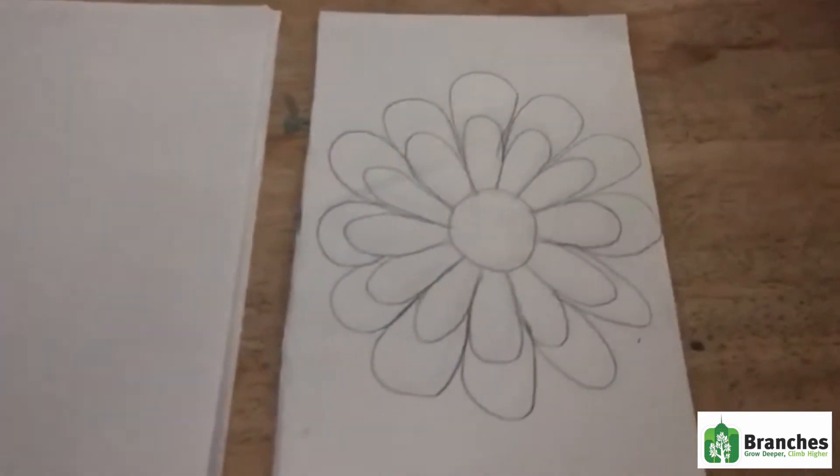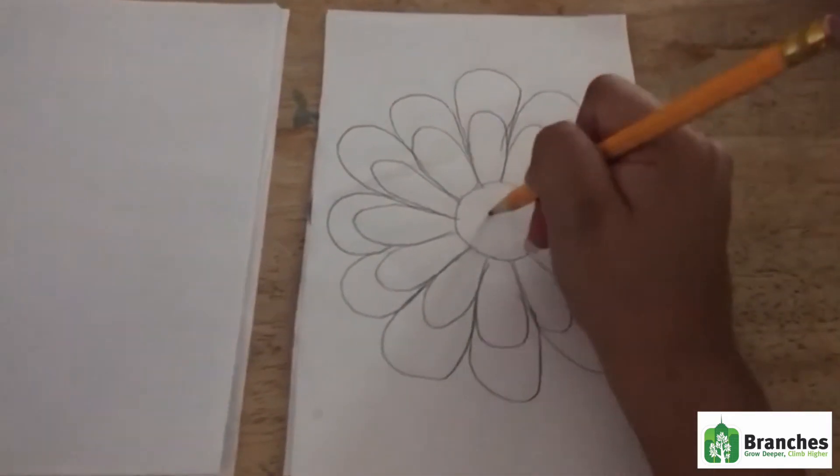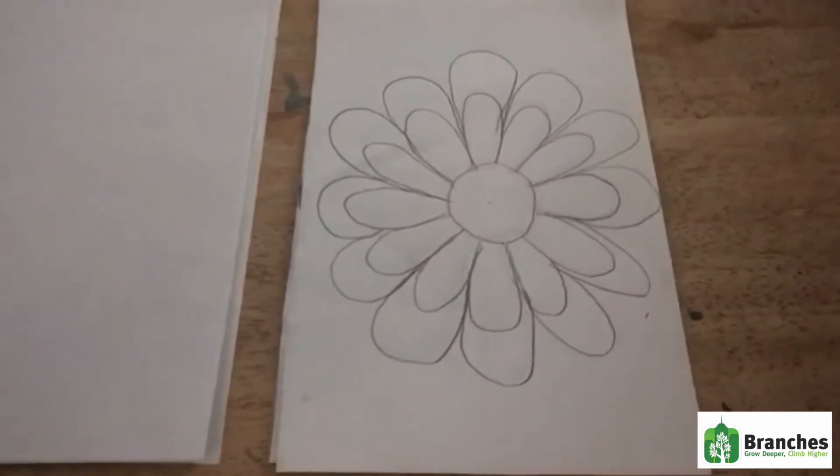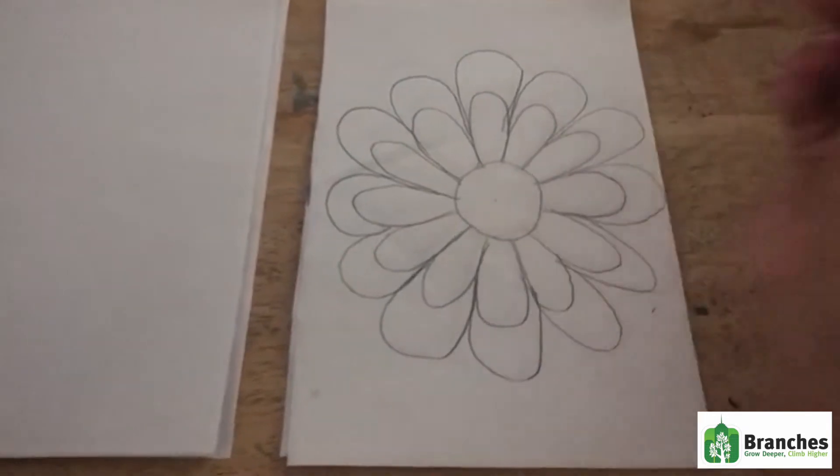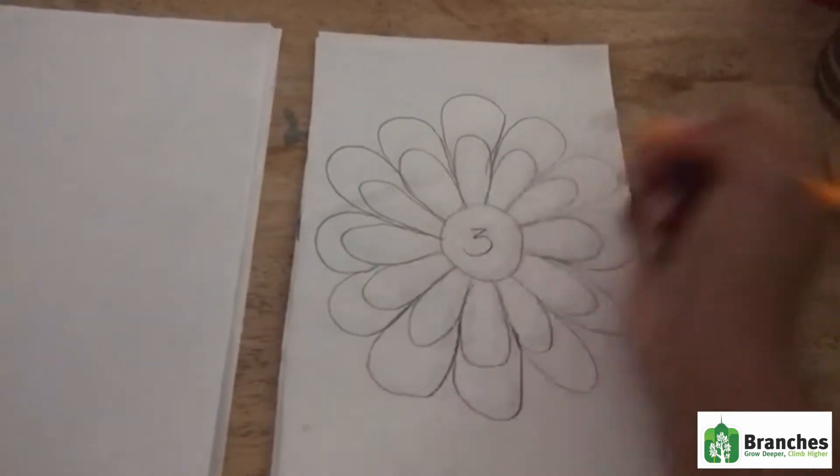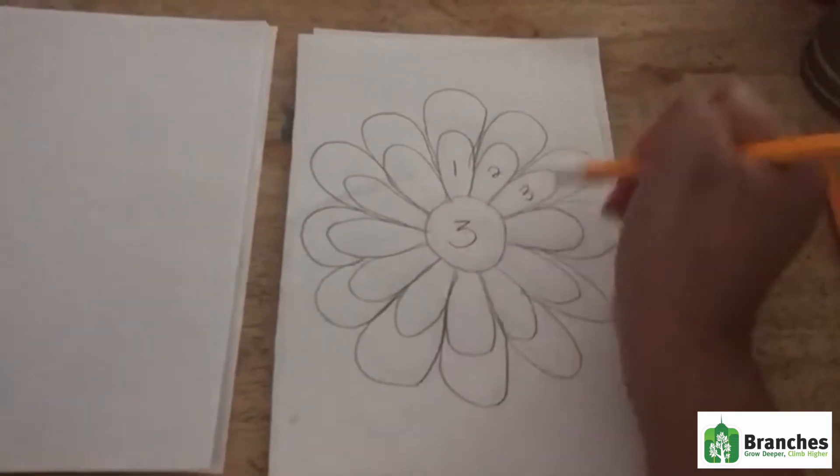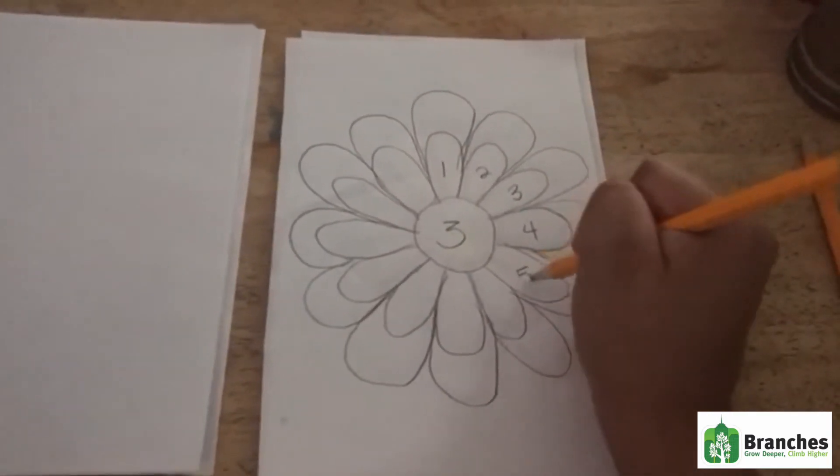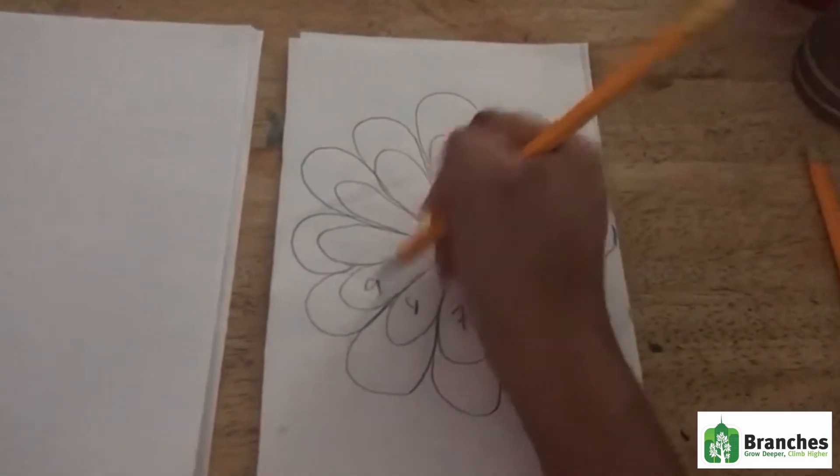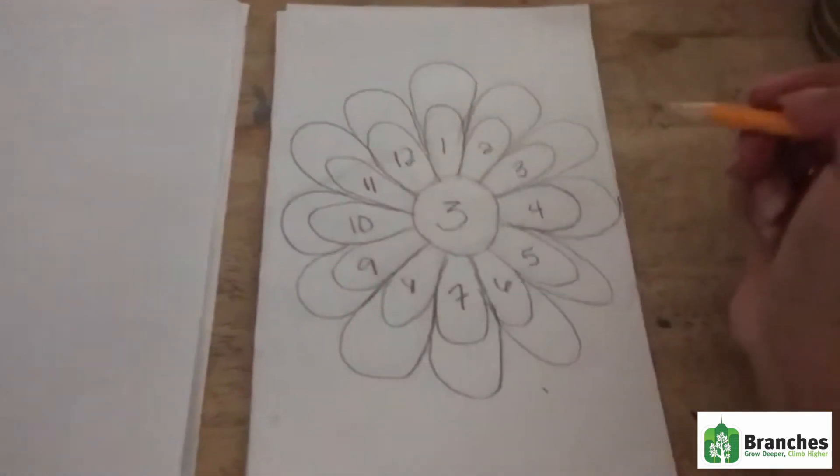Now you've got your flower. The next step is you're gonna write a number in here. You can either one through twelve and so for this one we're gonna do three. Then we're gonna put one, two, three, four, five, six, seven, eight, nine, ten, eleven, twelve. That would be our three times table flower.